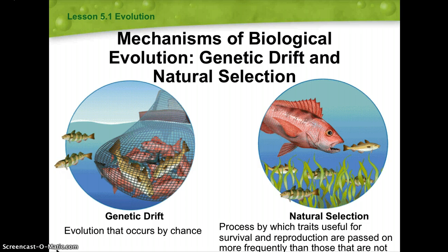We learned more about evolution by natural selection in 1858, when Charles Darwin and Alfred Russell Wallace each independently proposed natural selection as a mechanism for evolution to explain the variety of living things on Earth. In 1859, Darwin published his book On the Origin of Species, presenting decades of scientific evidence for natural selection. Thanks largely to the foundation Darwin built, natural selection is one of the best-supported theories in science today.